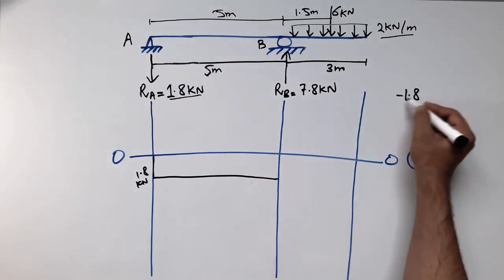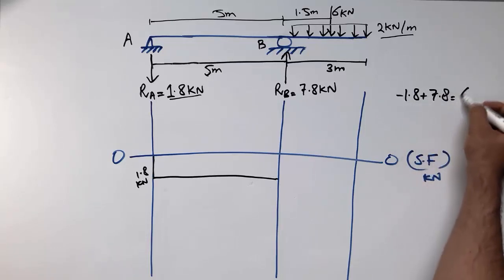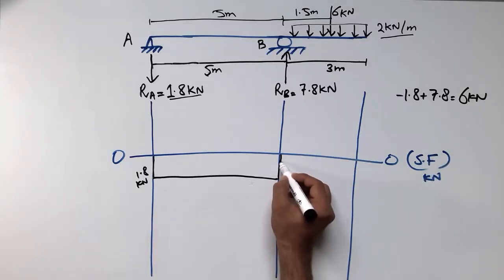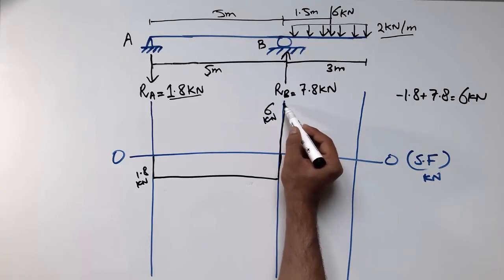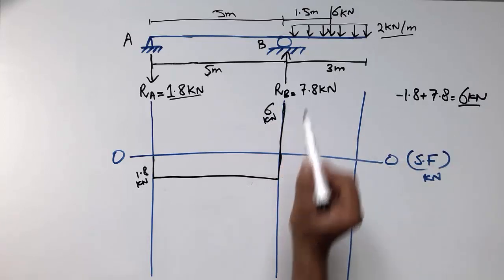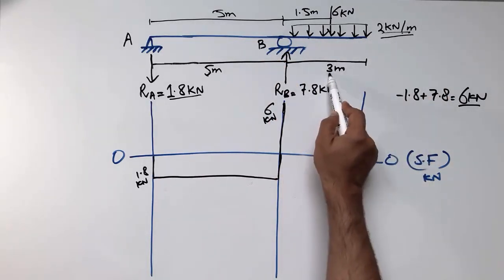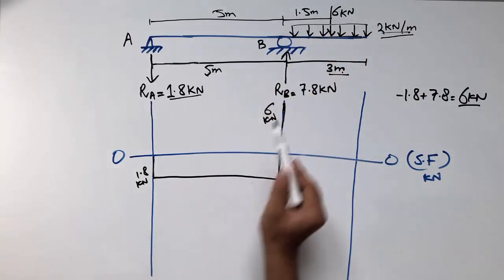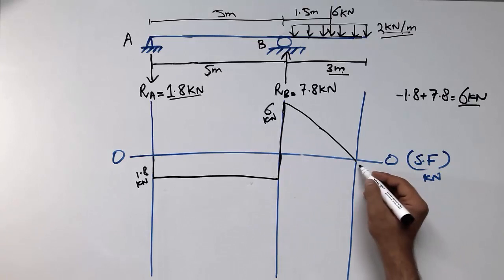Starting from −1.8 kN and adding the upward reaction of 7.8 kN at B gives: −1.8 + 7.8 = 6 kN. So the shear force jumps to 6 kN at support B. This 6 kN is then reduced by the downward UDL: 2 × 3 = 6 kN. Subtracting 6 from 6 gives zero, so the shear force returns to 0 at the free end.